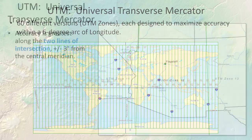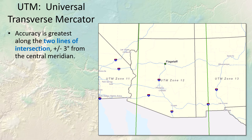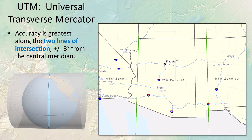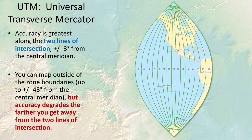Flagstaff is in UTM zone 12. Within the UTM zone, the projection distortion is minimized along the lines of intersection — meaning they are minimized at the edges of the zone. You can map outside of the zone boundaries; in fact you can go up to plus or minus 45 degrees from the central meridian of the zone, but accuracy does degrade the farther you get from those lines of intersection. If we were to try and map the entire world using UTM zone 12 coordinates, we can actually map all of North America and half of South America, but you can easily see the projection distortion once you get farther and farther away from the zone.